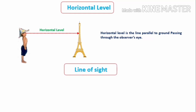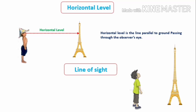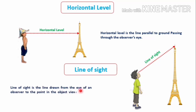The second term is line of sight. Consider a boy on the ground looking at some point on the top of a tower. The line connecting his eyes and the point he observes is called the line of sight. Note that the line of sight is not parallel to the ground. The line of sight is defined as the line drawn from the eye of an observer to the point in the object viewed by the observer.